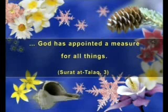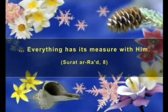Plants, galaxies, microorganisms, crystals and living things created according to this rule, imitated by artists, are all examples of God's superior artistry. God reveals in the Qur'an that He has created all things with a measure. Some of these verses read: God has appointed a measure for all things. Everything has its measure with Him.